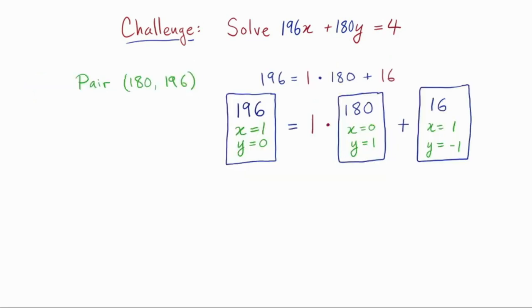That's all there is to the extended Euclidean algorithm. We just keep a recipe card on each number we come across as we go through the regular Euclidean algorithm.